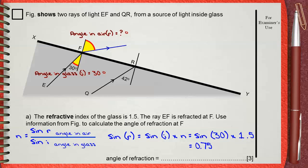Now 0.75 is sine the angle of refraction. By getting the inverse sine of 0.75, you get the angle of refraction, which is 48.6 degrees. You will need this in the next question.